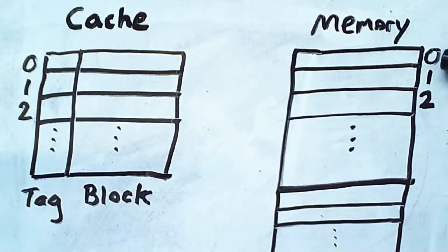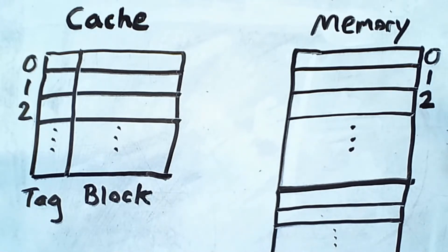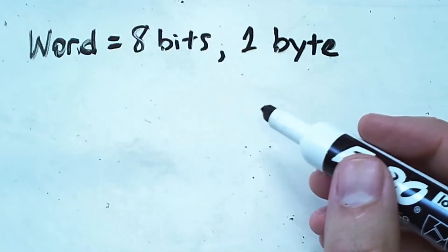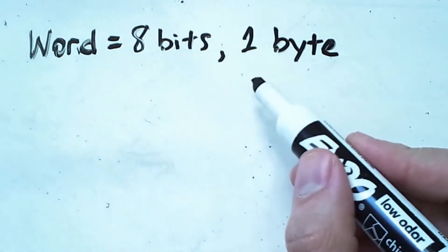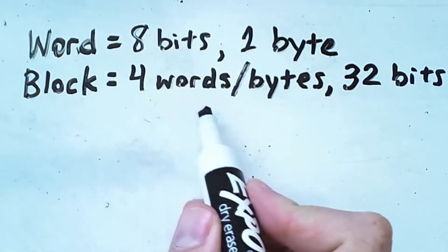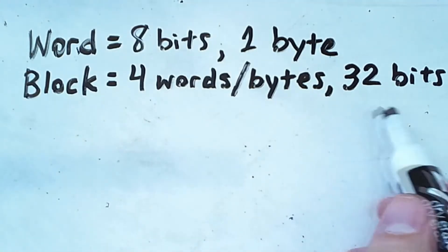So this is block 0, block 1, and block 2. However, memory is typically addressed using memory addresses, and there are multiple addressable memory words within each block. Before indicating what those addresses are, let's make up some numbers for various sizes. Our memory word size will be 8 bits, or 1 byte. Our block size will be 4 words, or bytes, which adds up to 32 bits.